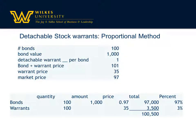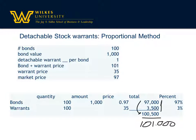Setting your problem up with these columns is helpful because you can use the same setup for the proportional method or the incremental method. We start with the quantity: we have 100 bonds and each bond has one warrant, so 100 bonds and 100 warrants. Each bond is $1,000 and sold at a market value of $97, so the total value of 100 bonds is $97,000. Each warrant is priced at $35, so 100 warrants times $35 is $3,500, giving a combined total of $100,500. But the bonds were sold at 101, which is $101,000, so we need to do some allocations.